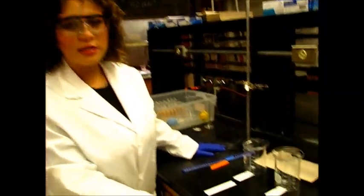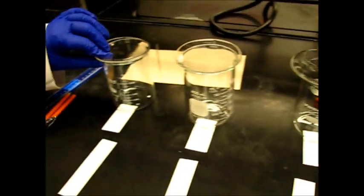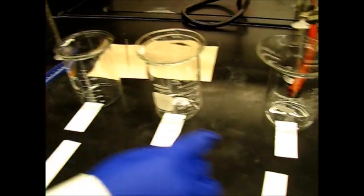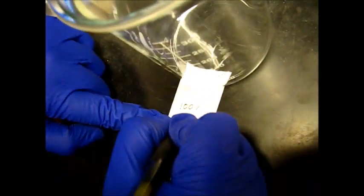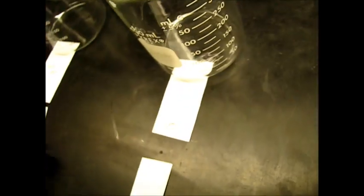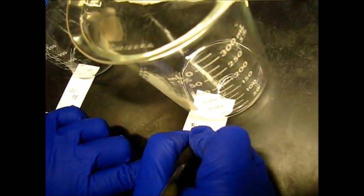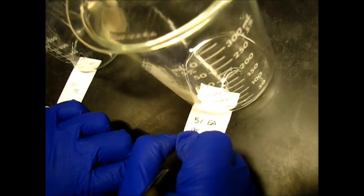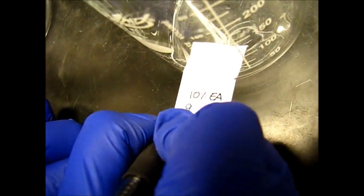Here we have our experiment set up. We have the three beakers with the watch glasses on top and we have to label them to know which one they will be. Our first one will be 100% PE. Our second one will be 5% EA and 95% PE. And for the third one we will do 10% EA and 90% PE.